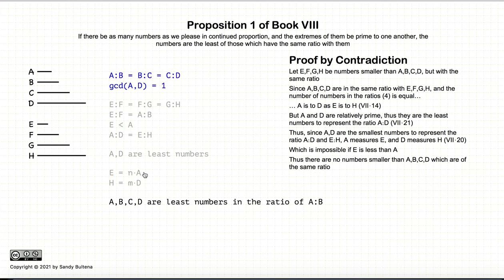So because it's a logical inconsistency, we can then turn around and say, well, A, B, C, and D are the least numbers in the ratio of A to B. And hence, that is our proof.